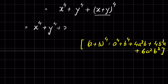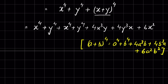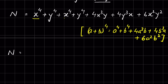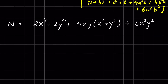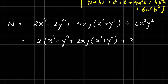Expanding (x plus y) to the power 4 gives x⁴ plus y⁴ plus 4x³y plus 4y³x plus 6x²y². Adding the extra x⁴ and y⁴ terms gives 2x⁴ plus 2y⁴ plus 4x³y plus 4y³x. Taking 4xy common gives 4xy(x² plus y²) plus 6x²y². Taking 2 as common factor: 2(x⁴ plus y⁴ plus 2xy(x² plus y²) plus 3x²y²).